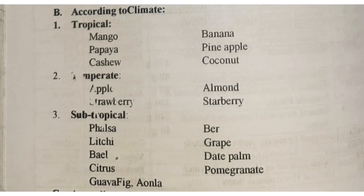According to climate, we know three types: tropical, temperate, and subtropical. Tropical fruits include mango, papaya, cashew, banana, pineapple, and coconut.